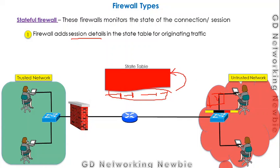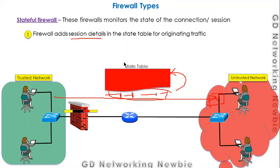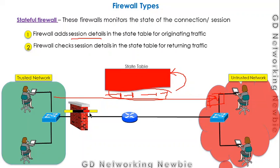When the server responds and sends something back to the client, the firewall looks into its state table. It checks whether the returning traffic belongs to a previously requested connection. If it does, the firewall allows it. If the traffic is not associated with a previous connection, the firewall discards it. So when traffic comes back, the firewall checks the session details in the state table for all returning traffic.